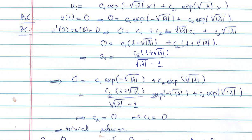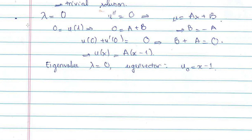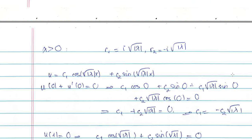The next case is lambda = 0. When lambda = 0, u'' = 0, and we know from class that this equation has a solution u = ax + b. Replacing into the first boundary condition u(1) = 0 gives 0 = a + b, so b = -a. The second boundary condition u(0) + u'(0) = 0 gives b + a = 0, which is consistent. Replacing b = -a, we get u(x) = a*(x - 1). So when lambda = 0 the eigenfunction is x - 1.